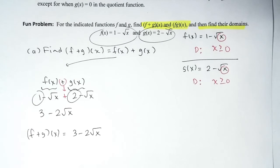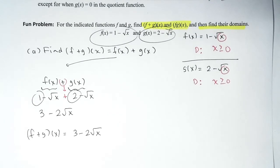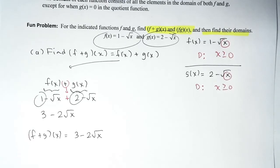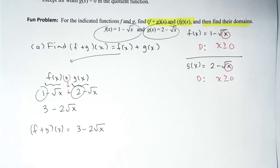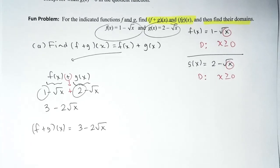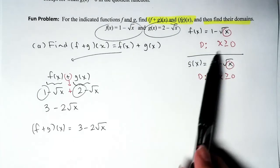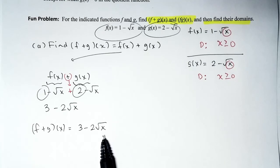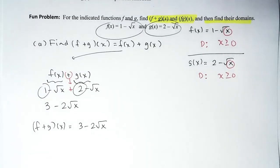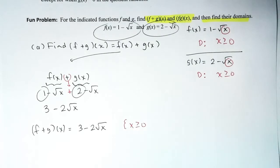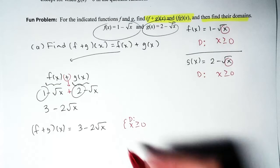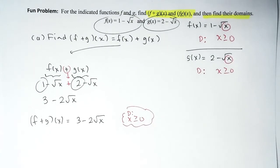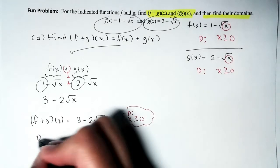We also have to identify the domain. The directions don't specify whether to use set builder notation or interval notation, but we'll use interval notation. The domain of the original functions is x ≥ 0. The sum also has a radical with even index, so the radicand cannot be negative — meaning x ≥ 0 as well. So the domain of the sum is x ≥ 0, which we'll write in interval notation.